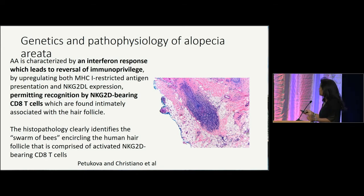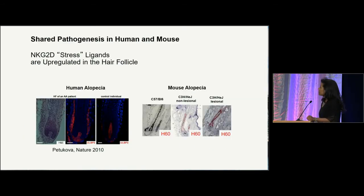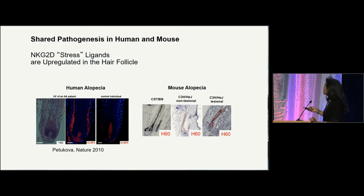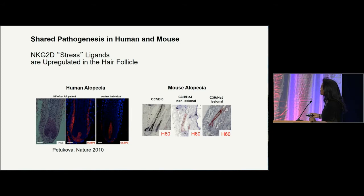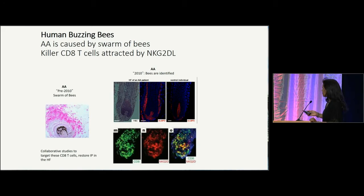We also see these CD8-positive T cells distributed around the base of the hair follicle, and that's termed a swarm of bees. Dr. Cristiano and her group very ably demonstrated increase in NKG2D stress ligands found in human patients with alopecia areata as well as in the mice. They also showed that these CD8-positive T cells are increased around the hair follicle and are attracted to NKG2D ligand.